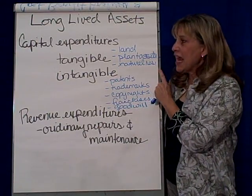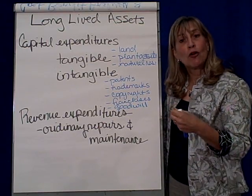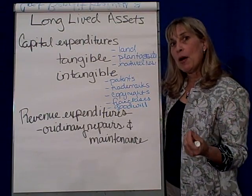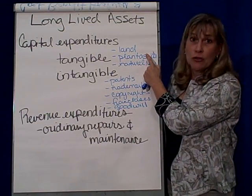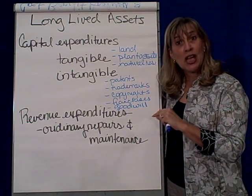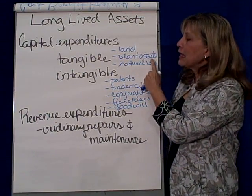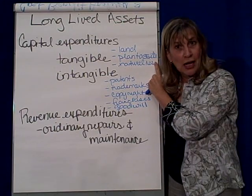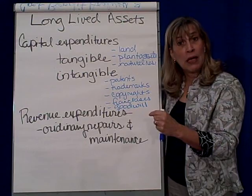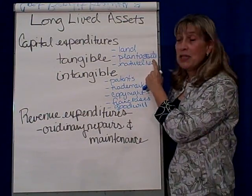When we have tangible capital expenditures, we depreciate or use them over time. Here are the different words we use depending on what they are. Land we never depreciate — land is forever, so it's never depreciated because land exists as long as the earth exists. Plant assets we depreciate — machinery, equipment, vehicles, buildings — those types of things.